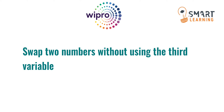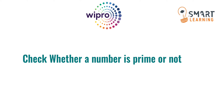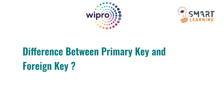The next question is a C program for swapping two numbers without using a third variable. It is a very common interview question and you also know the answer — we can do it simply by using addition and subtraction operators. The next question is also a program to check whether the given number is prime or not, which is also a very common interview question.